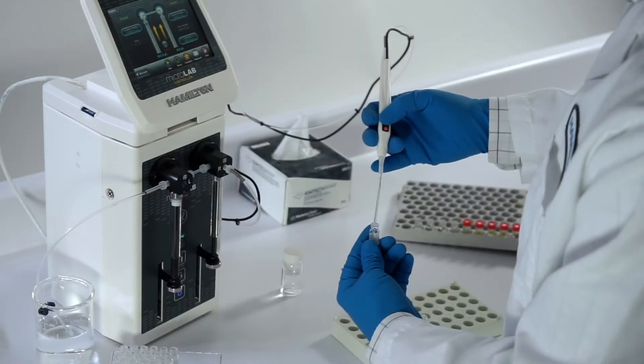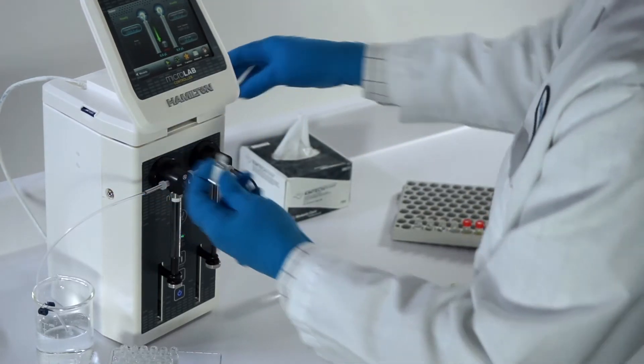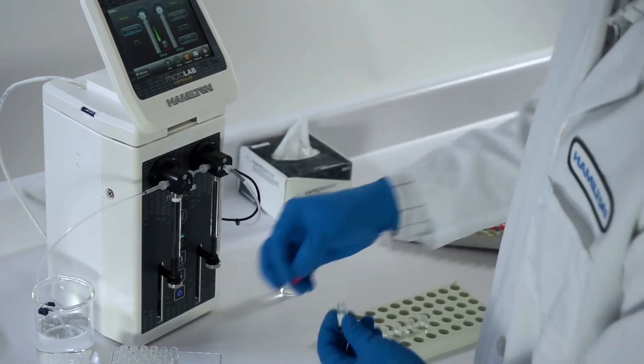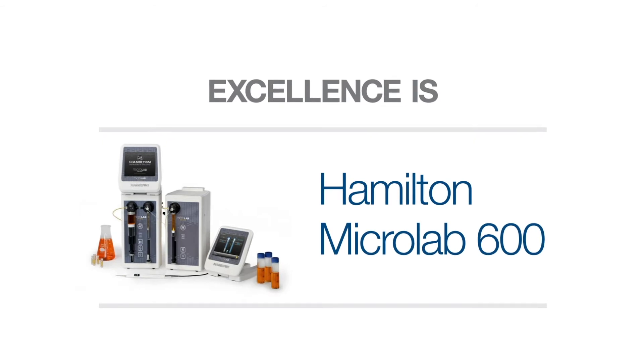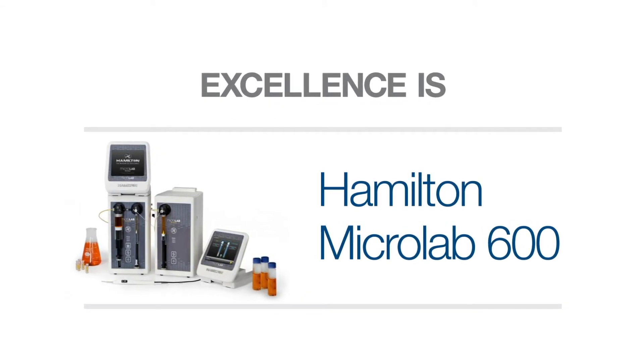This process is repeated for all remaining unknowns. When the last unknown sample is diluted, the hand probe is reattached to the instrument and the sample is capped and placed in a rack ready for the auto-sampler. Contact a Hamilton representative to learn more about how semi-automation with the Microlab 600 can streamline your analytical standards and sample preparation.